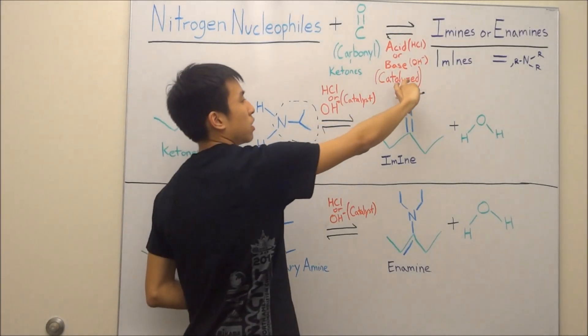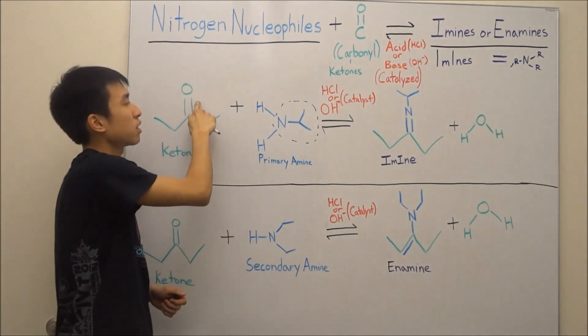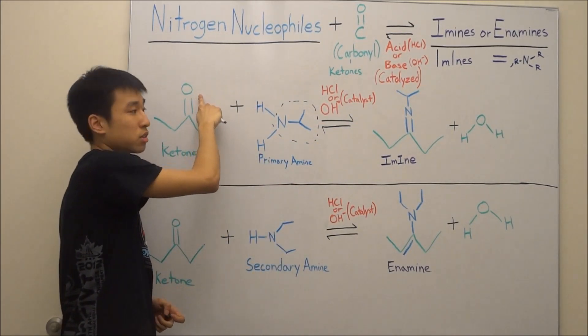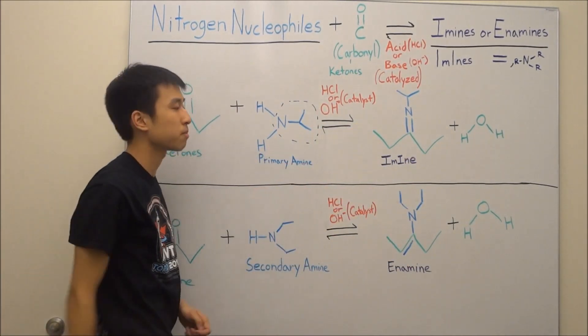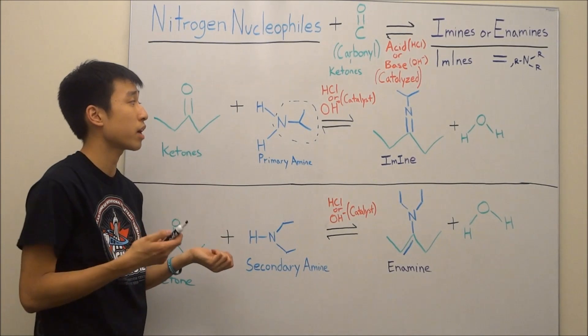And then the oxygen is going to be kicked off by the nitrogen and it's going to turn into water. And beyond that, because nitrogen is different from oxygen, oxygen is neutral and happy when you use two bonds. Nitrogen is happy and neutral when you use three bonds.